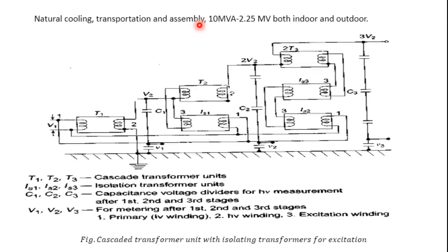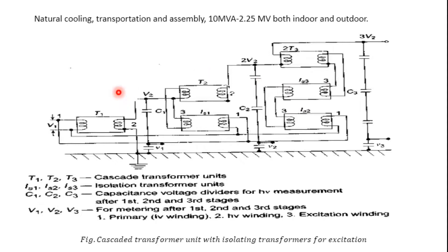A star and delta connection is possible with this method. Generally, testing transformers operating at 10 MVA in cascaded connection will give a high voltage output of 2.25 megavolts. It is possible for both indoor and outdoor applications. The limitation is that it requires too many transformers and is not fully reliable, but the advantage is that identical transformers can be used to raise the voltage.